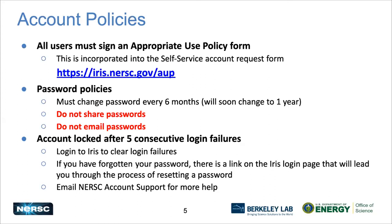When trying to access systems like Cori, you will get locked out if you enter your password incorrectly five times. You can log into IRIS to automatically clear those lockouts. Of course, if you have a problem with your password and can't log into Cori, you probably won't be able to log into IRIS either — so on the IRIS login page there is a link to reset your password. If all else fails, you can send an email to account support for help.